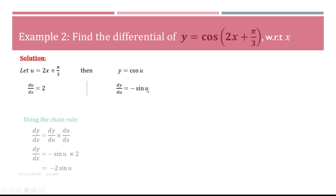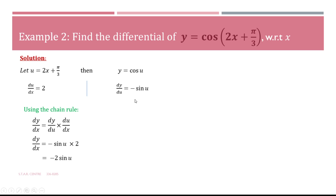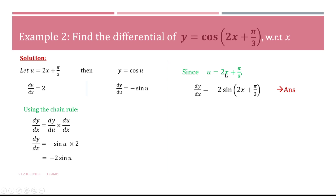Now we substitute into the chain rule: dy/du is minus sine u and du/dx is 2, giving minus 2 sine u. Be careful not to write 2 then minus sine u without brackets, as that would mean something different — always write the constant in front. Since there is no variable u in our original example, we re-substitute u equals 2x + π/3, giving the final answer: dy/dx equals minus 2 sine(2x + π/3).